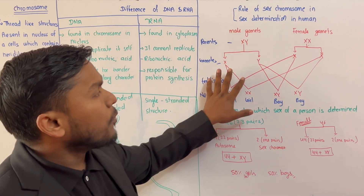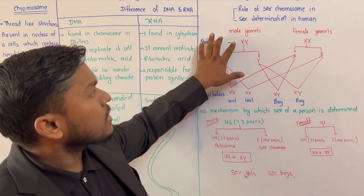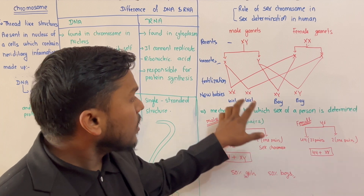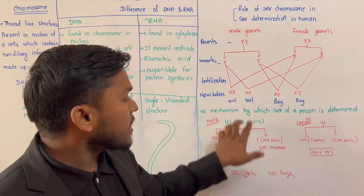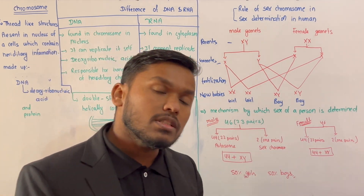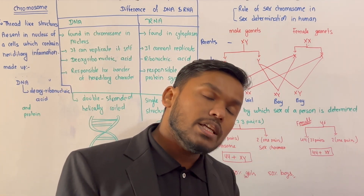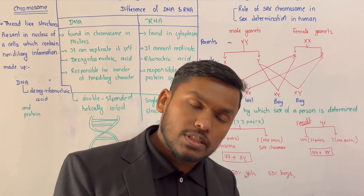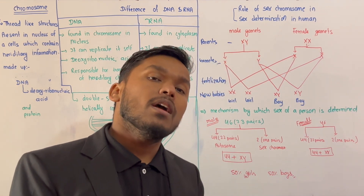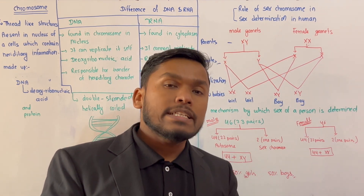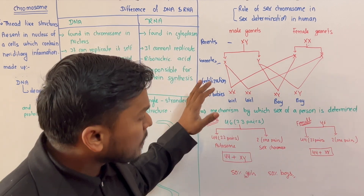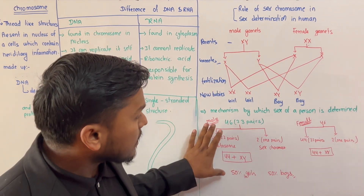When a cross is made between male gamete and female gamete, 50% probability gives boys (XY) and 50% gives girls (XX). This is how sex determination works.